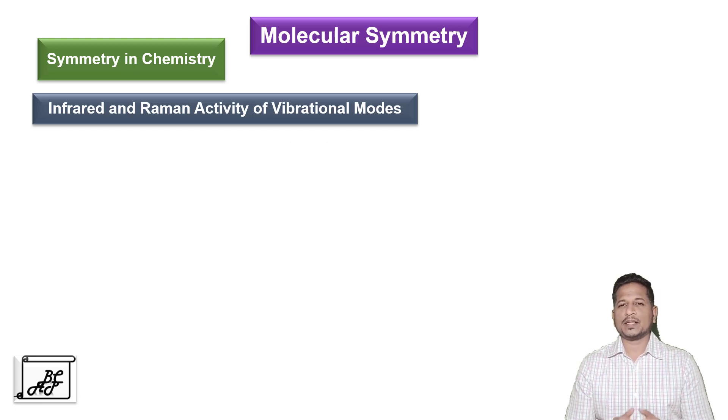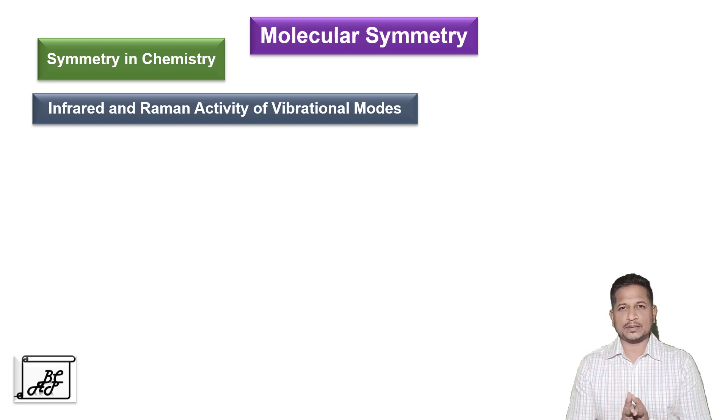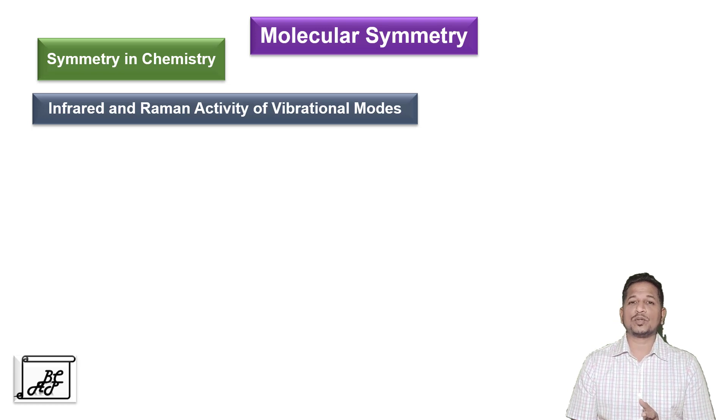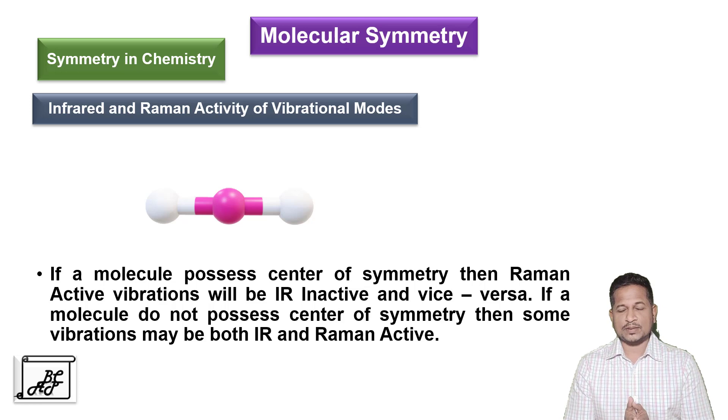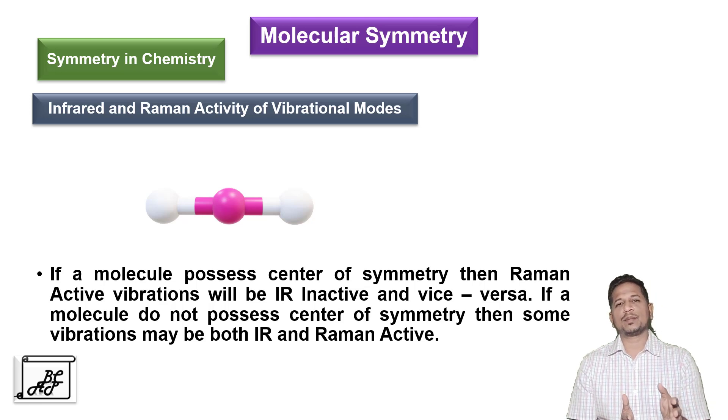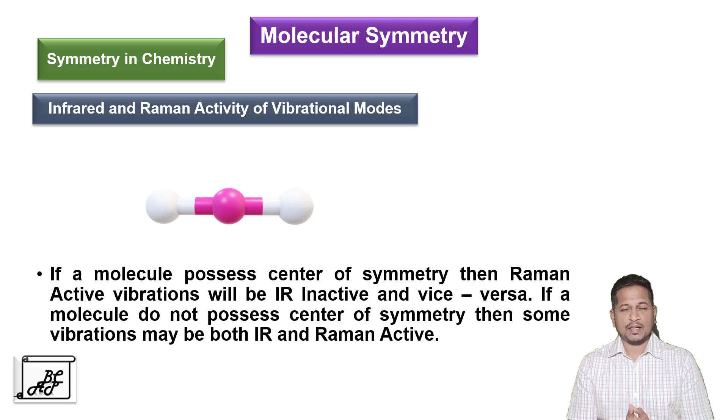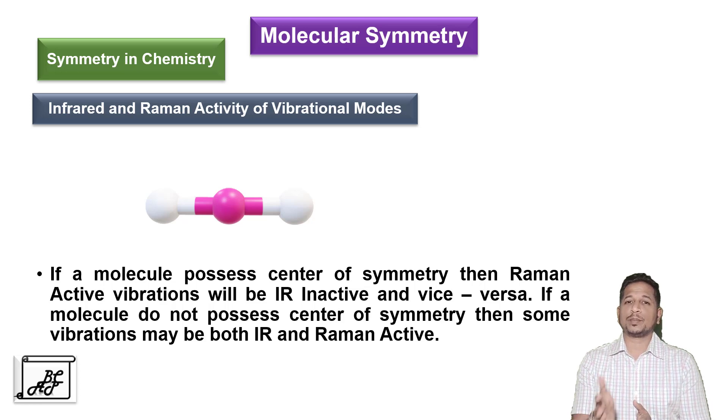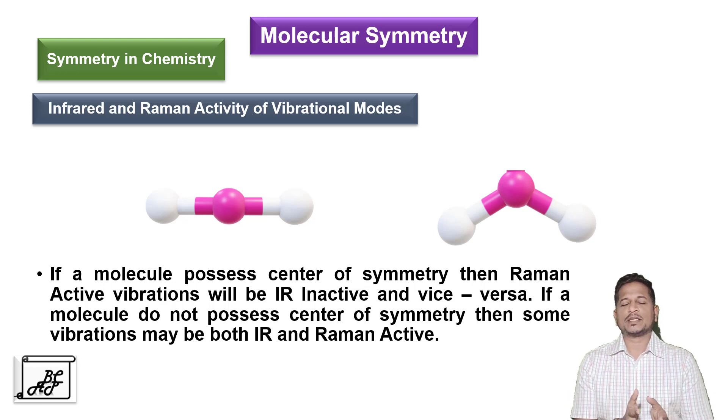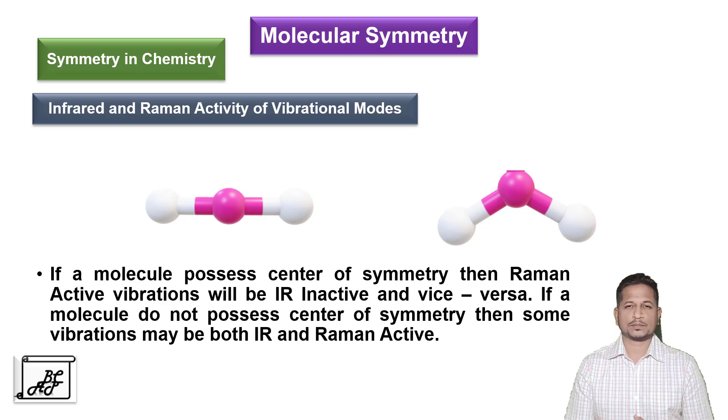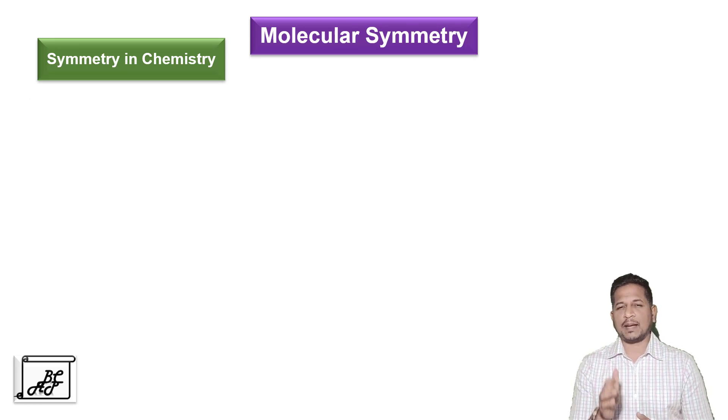This could be understood by taking two examples. First is CO2 molecule which possesses center of symmetry. When a molecule possesses center of symmetry, its IR active vibrations will be Raman inactive and Raman active vibrations will be IR inactive. Whereas if the molecule does not possess center of symmetry like H2O molecule, some vibrations may be both IR and Raman active.